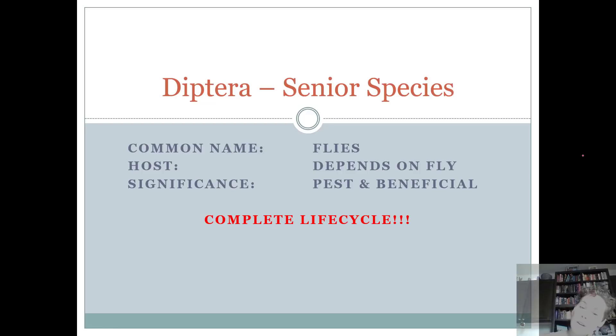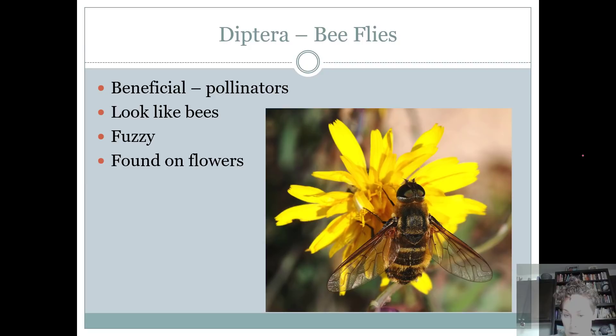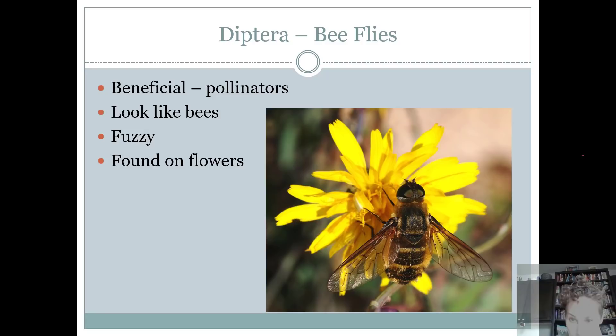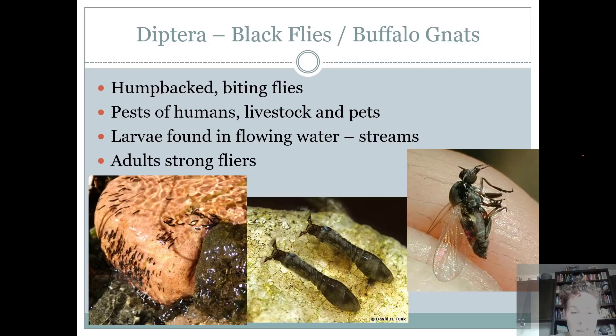If you're an intermediate, you can go ahead and shut down and log off, because now we're going to cover Diptera that only the seniors need to know. There are six additional Diptera for seniors to be aware of. Bee flies are one. Bee flies look like syrphid flies. The big difference is that bee flies are fuzzy like a bee, while a syrphid fly is not. Bee flies are found around flowers — they look similar to bees and are really fuzzy. They're beneficial because they're pollinators.